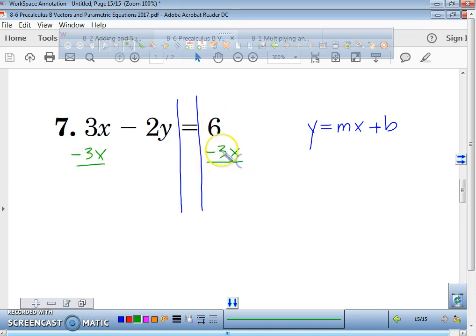Take away 3x. These aren't like terms, right? When that zeros out, you're left with negative 2y equals negative 3x plus 6. Then what are we going to do all the way across to solve for y? Divide everything by a negative 2.